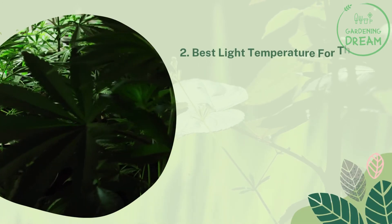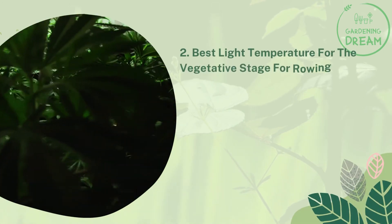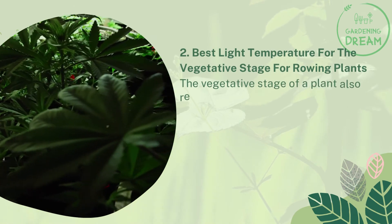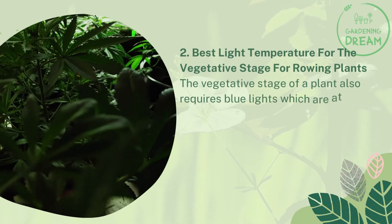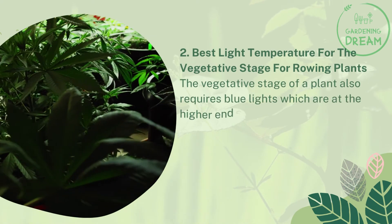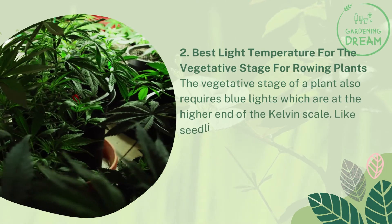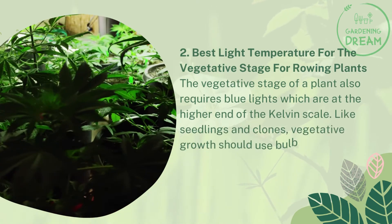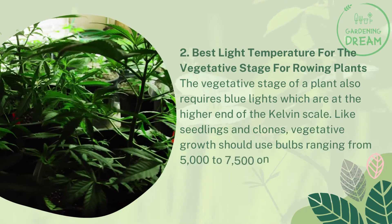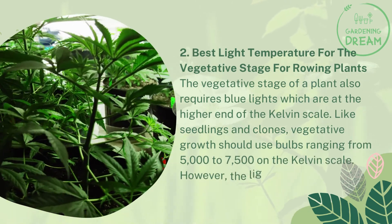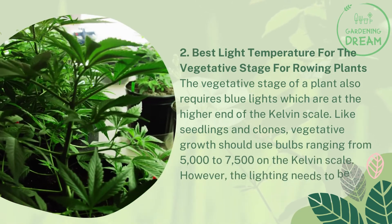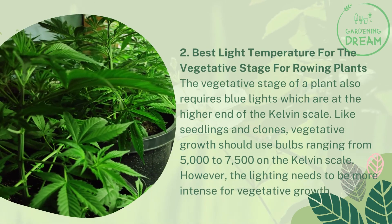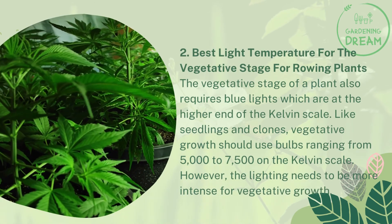Number two: best light temperature for the vegetative stage. The vegetative stage also requires blue lights at the higher end of the Kelvin scale. Like seedlings and clones, vegetative growth should use bulbs ranging from 5,000 to 7,500 Kelvin. However, the lighting needs to be more intense for vegetative growth.